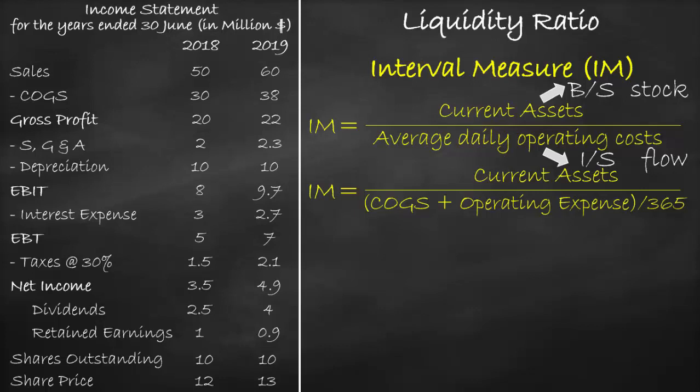In summary, any time you find a financial ratio that includes an item from an income statement and an item from the balance sheet, you will use the income statement item and get the average of the two balance sheet items. So we can rewrite the interval measure formula as average current assets divided by cost of goods sold plus operating expense, divided by 365.